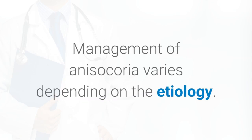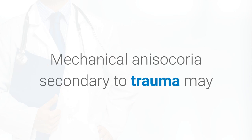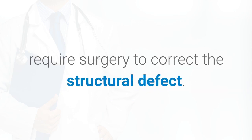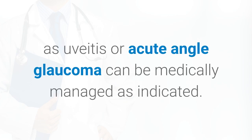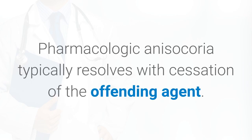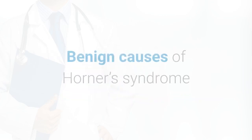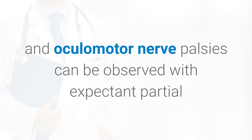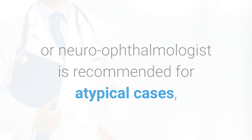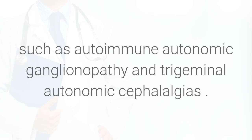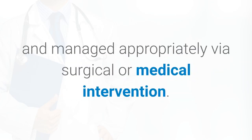Management of anisocoria varies depending on the etiology. Physiologic anisocoria is often asymptomatic and does not require intervention. Mechanical anisocoria secondary to trauma may require surgery, while that secondary to conditions such as uveitis or acute angle-closure glaucoma can be medically managed. Pharmacologic anisocoria typically resolves with cessation of the offending agent. Adie's tonic pupil can be managed with glasses and pilocarpine to constrict the pupil. Benign causes of Horner's syndrome and oculomotor nerve palsies can be observed with expectant partial or full resolution of symptoms. Consultation with a neurologist or neuro-ophthalmologist is recommended for atypical cases such as autoimmune autonomic ganglionopathy and trigeminal autonomic cephalalgias. Life-threatening causes such as stroke, aneurysm, hemorrhage, dissection, and tumor must be ruled out and managed appropriately via surgical or medical intervention.